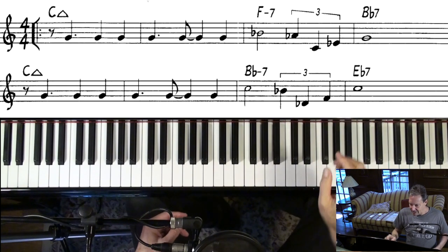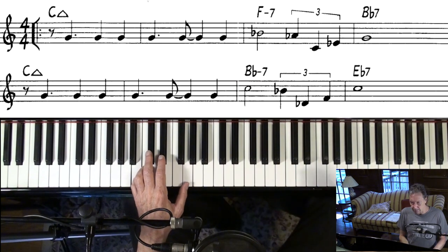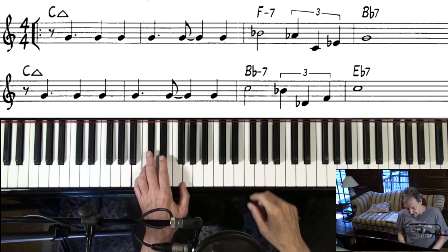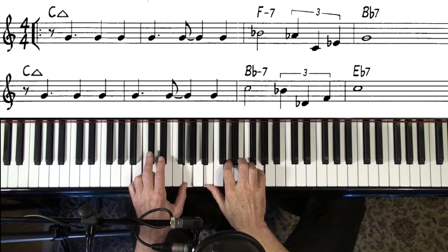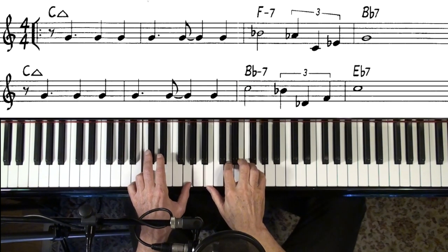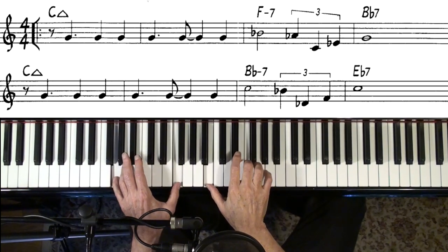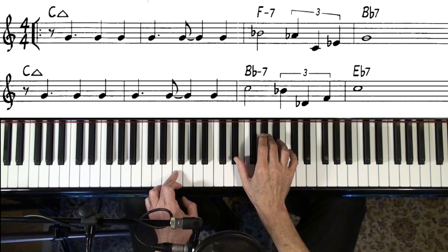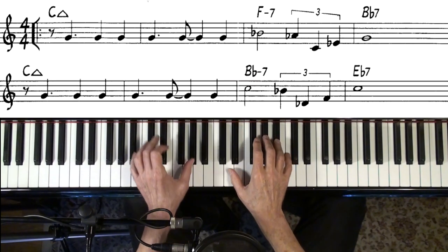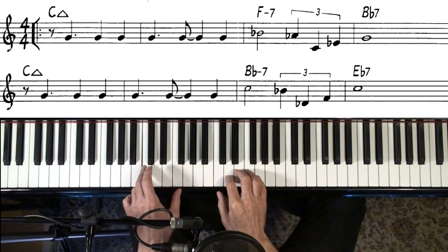Tad Dameron, I believe, was a piano player, and very influential in the bebop era, and there's some nice chord changes in here. We start off with this first one, instead of a two, five, one, we've taken that two and moved it up by a minor third and gone two, five, one, like this.